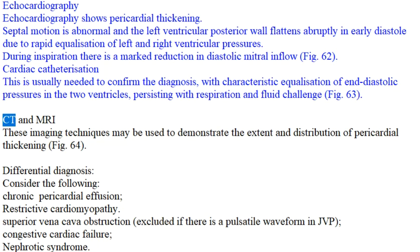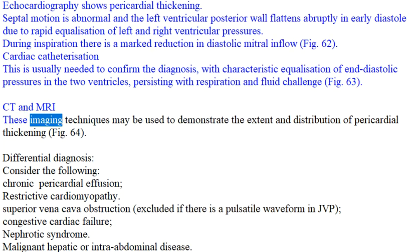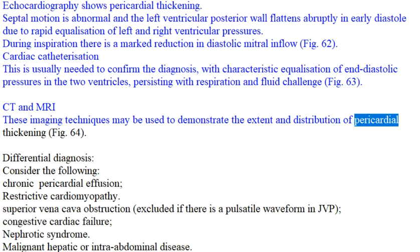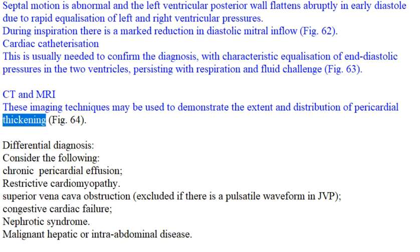CT and MRI: These imaging techniques may be used to demonstrate the extent and distribution of pericardial thickening.